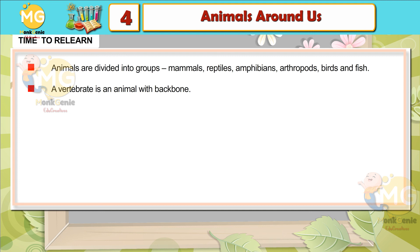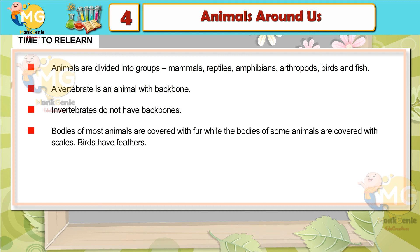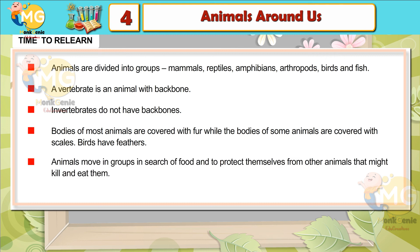Time to Review: Animals are divided into groups — mammals, reptiles, amphibians, arthropods, birds and fish. A vertebrate is an animal with a backbone; invertebrates do not have backbones. Bodies of most animals are covered with fur, while the bodies of some animals are covered with scales. Birds have feathers. Animals move in groups in search of food and to protect themselves from other animals that might kill and eat them.